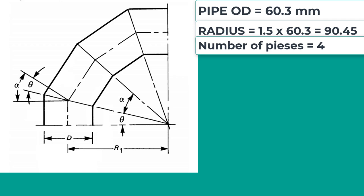In this example, I am going to make a 90 degree elbow. So the degree of bend equal to 90 degree.